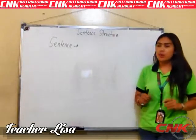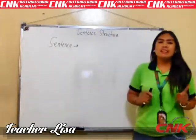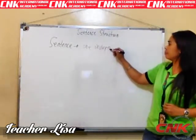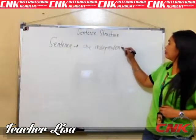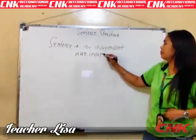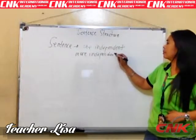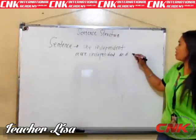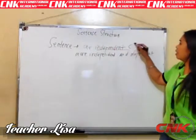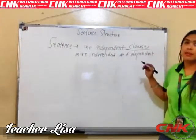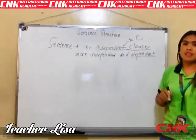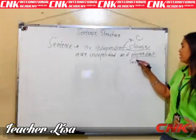First, let's define the word sentence. A sentence may consist of one independent clause or more independent clauses and dependent clauses. An independent clause is also called the main clause, while a dependent clause is also called a subordinating clause.